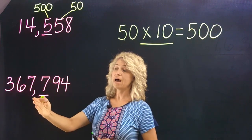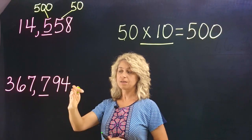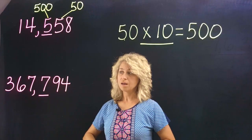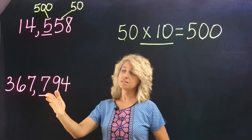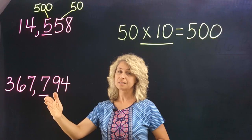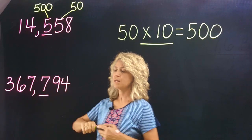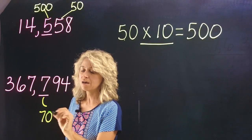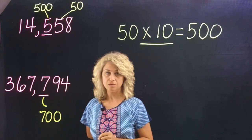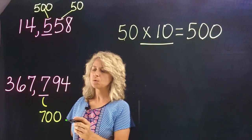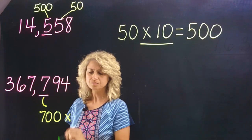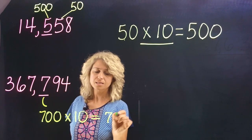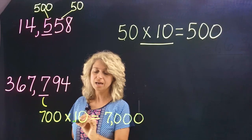Three hundred sixty-seven thousand, seven hundred ninety-four. Now what if I said: can you circle the digit that is ten times the seven in the hundreds place? Let's look at this seven in the hundreds place — the value would be seven hundred. Now what is ten times seven hundred? Times ten would be seven thousand — just add one extra zero.